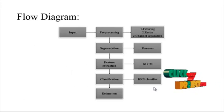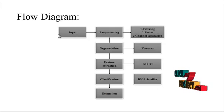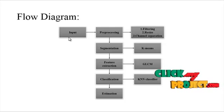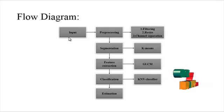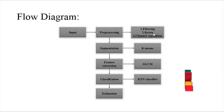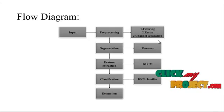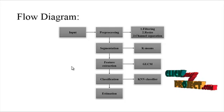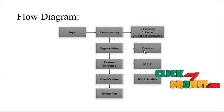Let us discuss the flow diagram. First, click the input image from the database. Then the pre-processing step is applied, which includes three steps: filtering, resize, and channel separation. In channel separation, the image is separated into three channels using RGB.